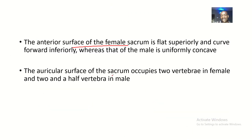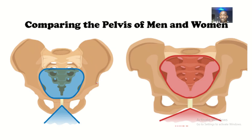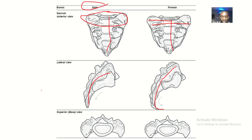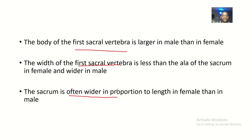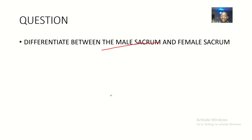The auricular surface of the sacrum occupies two vertebrae in females, but in males it occupies two and a half vertebrae. So the auricular surface is larger in males than in females. In females it covers the first and second sacral vertebrae, while in males it covers the first, second, and half of the third sacral vertebrae. That's the comparison between the male and female sacrum.